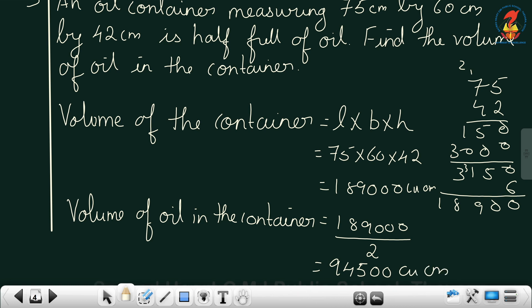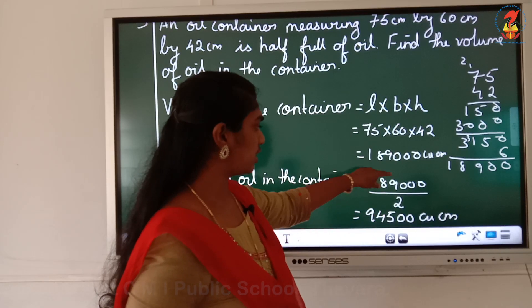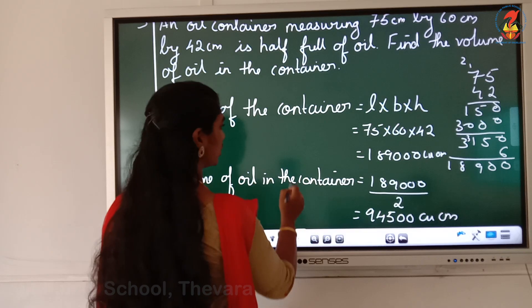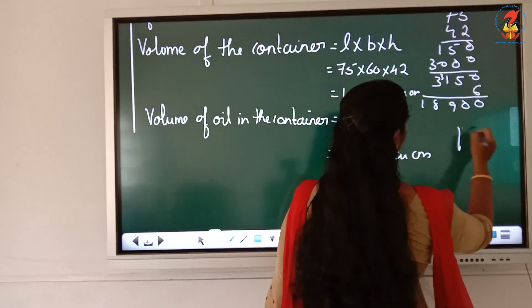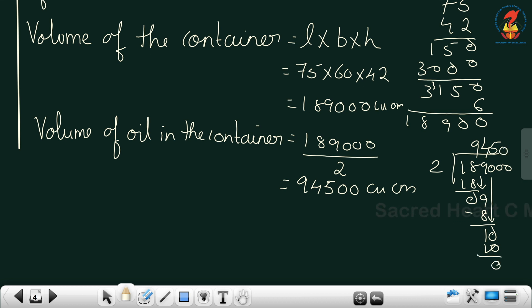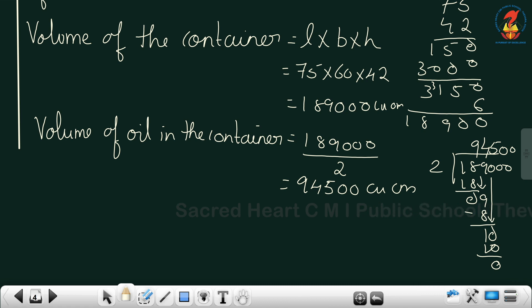When you divide 1,89,000 by 2: 18 divided by 2 gives 9, bring down 9, 4, 2s are 8, remainder 1, bring down 0, 5, 2s are 10, remainder 0, then two more zeros come down. So 94,500 cubic centimeter is the volume of the oil in the container.